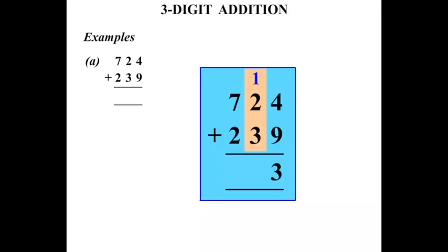Our next column. From the top. 1 plus 2 is 3. Plus another 3 is 6. Our next column. 7 plus 2 is 9.